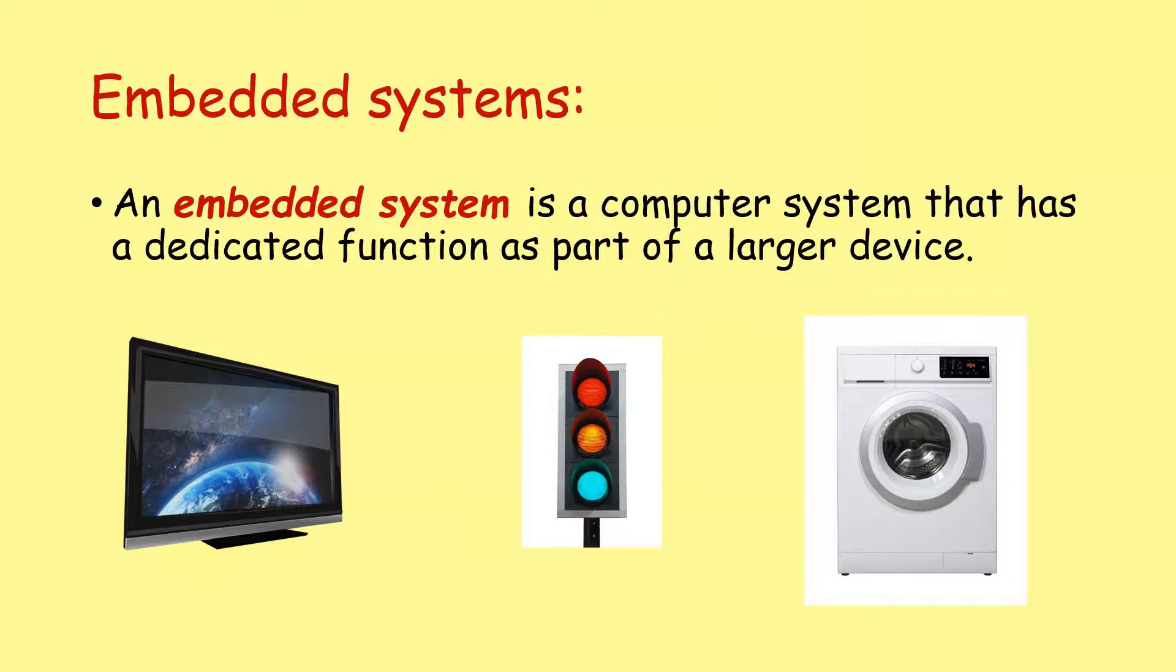An embedded system however doesn't really look like a traditional computer system. It is a computer system, a computer device that has a dedicated function as part of a larger device. So the examples here are your smart television, your traffic lights, your washing machine or tumble dryer. It's the idea that they have computer chips in them but they don't look and feel like computer systems in the same way that your desktop or your laptop do.